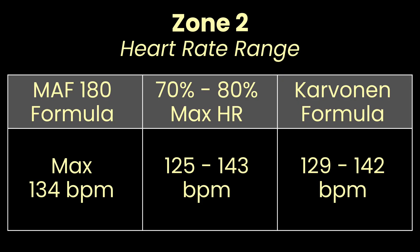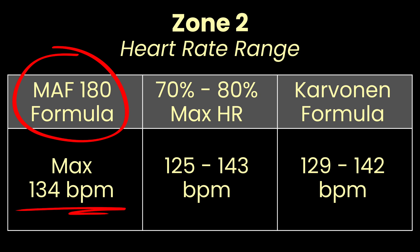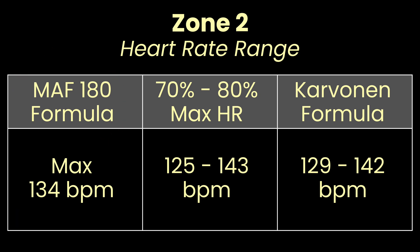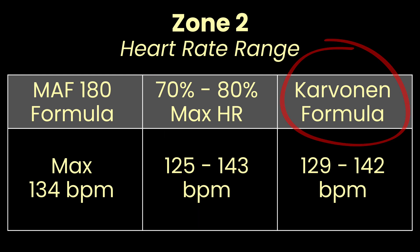This table shows my zone 2 heart rate range based on these three formulas. For the MAF 180 formula, my zone 2 heart rate ceiling is 134 beats per minute. When using 70 to 80% of my maximum heart rate, my zone 2 range is between 125 to 143 beats per minute. And finally, the Karvonen formula puts my zone 2 range between 129 and 142 beats per minute.